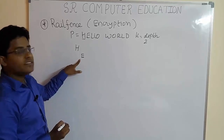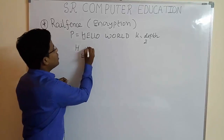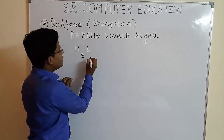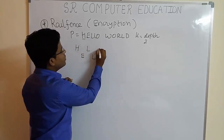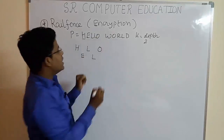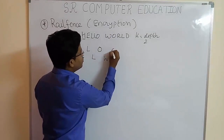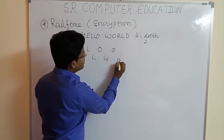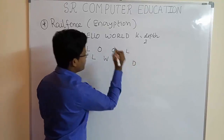So the next letter after E you have to write here. Then next here. Then O. Then W. Then again O. Then R. Then L. And then D.